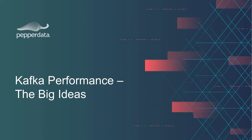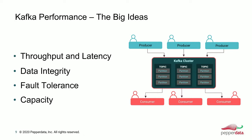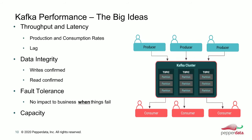The big ideas when looking at Kafka performance are throughput and latency. Throughput is how many messages can make it through the system in a given amount of time; latency is how fast those messages get through. There are metrics associated with these that Kafka will show you — production rates, how fast producers are producing, and consumption rates, how fast consumers are consuming.